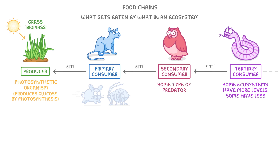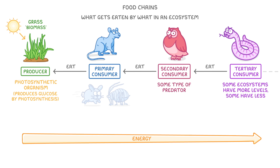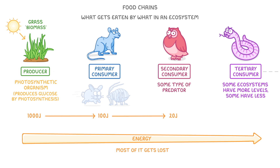Something really important to remember with food chains is that as the energy gets passed up the different levels, most of it gets lost. For example, if there were 1000 joules of energy in the grass, then only around 100 joules or so might be passed on to the mice, and only around 20 joules might be passed on to the owl. Whenever you're drawing out a food chain, the arrows between the different levels actually represent this flow of energy up the chain, so we need to draw them the other way around.